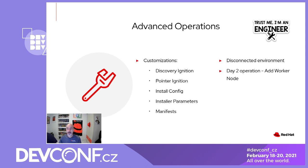There are a lot more customizations available than what we saw in the demo. Some of those are not exposed in the UI, as we do not want to add complexity when most users won't be using these options. These customizations are available via direct calls to the REST API. For example, we can make changes to the Ignition files. Ignition is a utility used by CoreOS to manipulate disks before or during the first boot — this includes writing files, configuring users, and more. We have two types of Ignition files: the Discovery Ignition for the ISO, which is common to all nodes in a specific cluster, and the Pointer Ignition, which can be customized for specific hosts. The Pointer Ignition reads its configuration from the Assisted Service and applies it before pulling additional configuration from the machine config server running on the bootstrap.